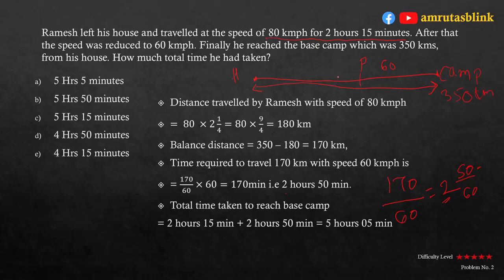The first part takes 2 hours 15 minutes and the second part takes 2 hours 50 minutes. Total time = 2h 15m + 2h 50m = 4 hours and 65 minutes. Since 65 minutes equals 1 hour 5 minutes, total time is 5 hours and 5 minutes — answer option A. This problem involves conversion of time, kilometers, and minutes, plus addition of hours and minutes.